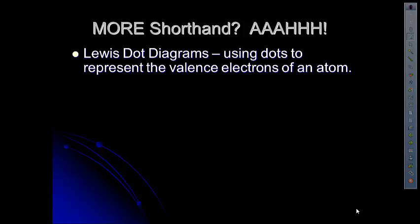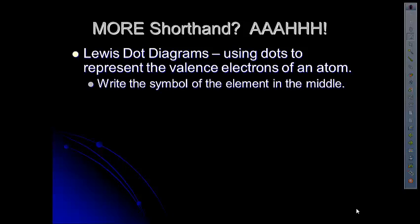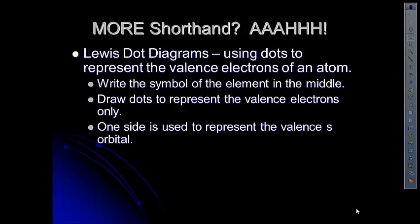It's called Lewis dot diagrams. And what we do is we just use dots to represent just the valence electrons of the atom. So we're not looking at all of the 1s2, we're just looking at the valence electrons. So think about how many would be the maximum number of valence electrons you could have.